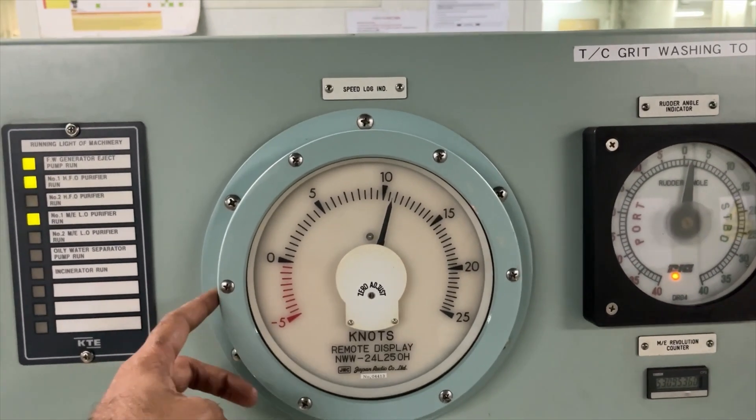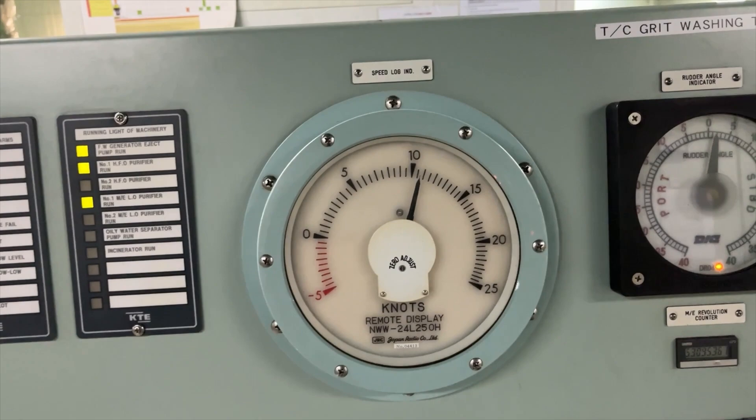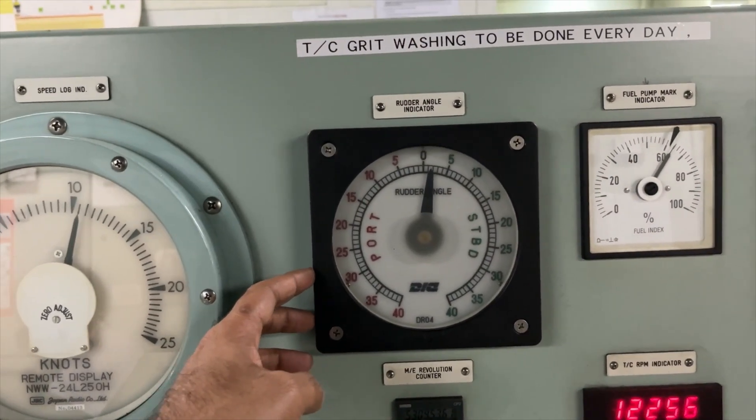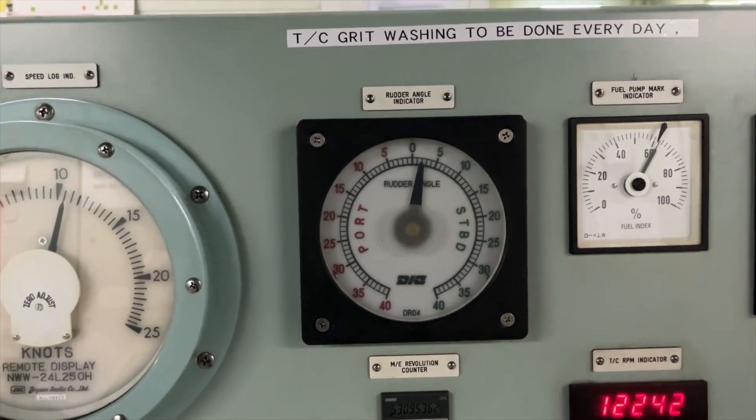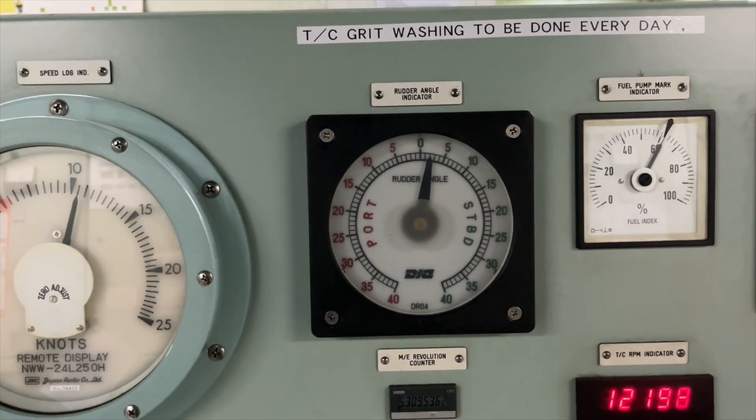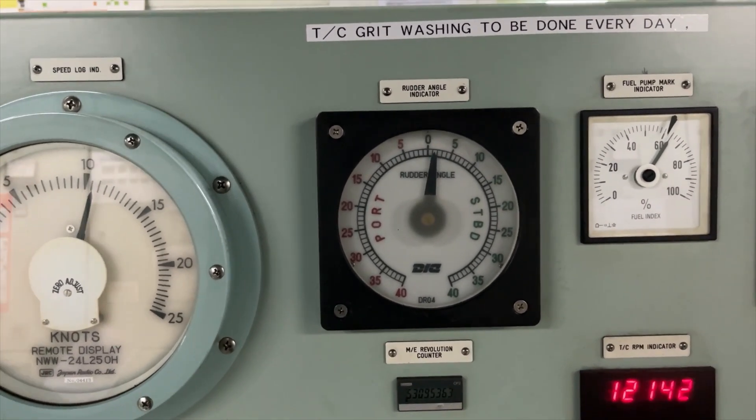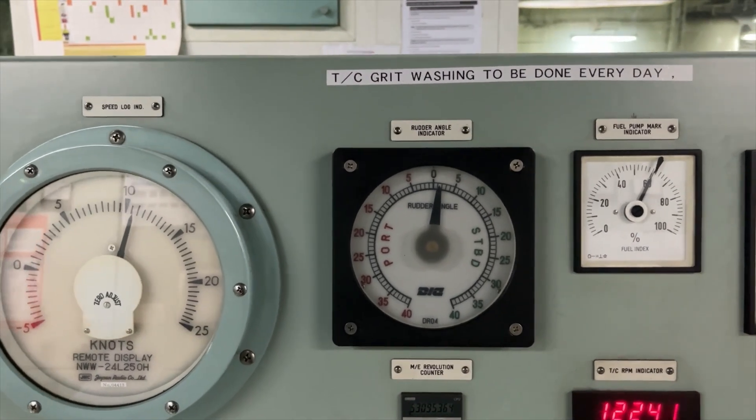This unit is your speed log indication, whatever the speed right now the ship is giving is indicating over here and this is radar angle indicator. This is just a repeater, the main unit is on the bridge. Repeater you will find on the maneuvering platform also and on bridge port and starboard.